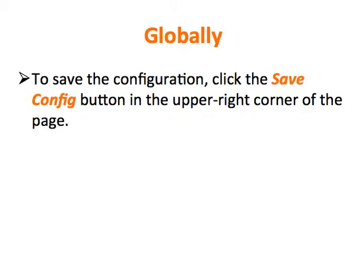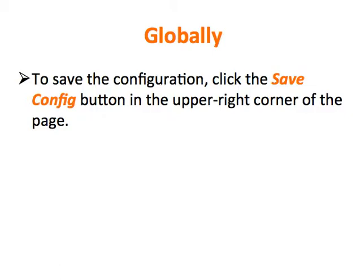To save the configuration, click the Save Config button in the upper right corner of the page. MAP settings on the product level become available once the MAP functionality is enabled. For gift cards and bundle products with dynamic pricing, the MAP settings are not available.